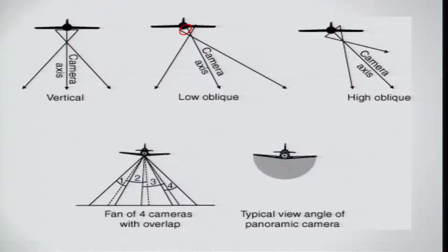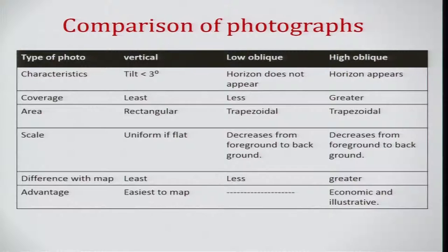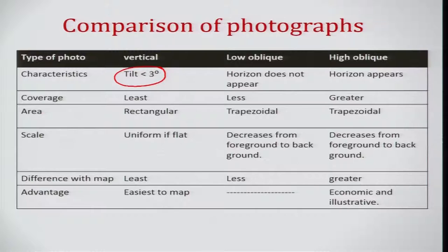In a panoramic combination, the center may be vertical but the sides will be oblique. Looking at the comparison in terms of vertical photograph, low oblique, and high oblique photographs — their importance in terms of coverage area, scale, and other factors is shown in this important table. For vertical photographs, the tilt will be around less than 3 degrees.